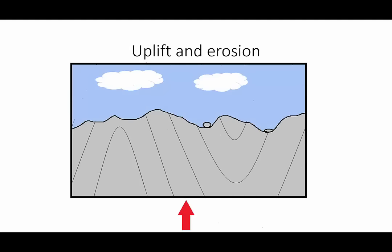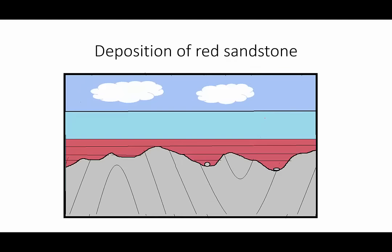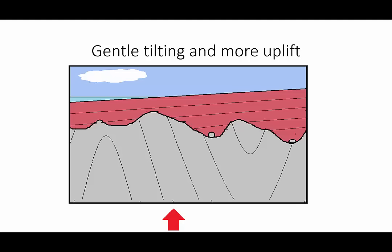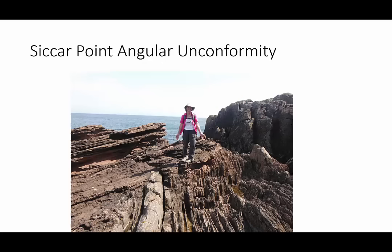Notice the pebbles of graywacky can remain in the lower parts of the erosional surface. Next, the rock is again below sea level. Because it's in the ocean that the sediment that will become the red sandstone was deposited. The sandstone is formed. It's uplifted and gently tilted. With a little more erosion, you have the Siccar Point angular unconformity.